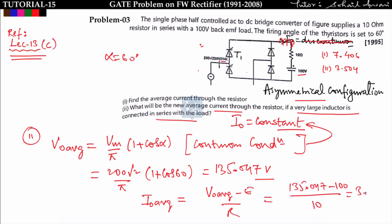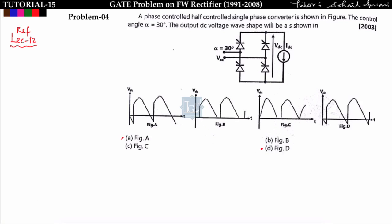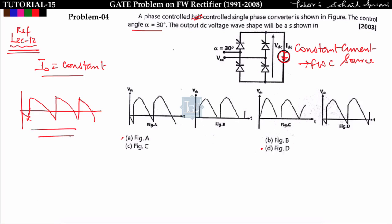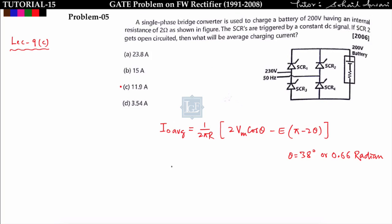Next problem: a phase-controlled, fully-controlled single-phase converter with α = 30°, with load represented as a constant current source (I0 constant). The output DC voltage waveform of a single-phase full converter with constant current load repeats from α to π + α, giving a continuous waveform. Both figure A and figure D are correct.